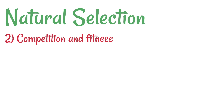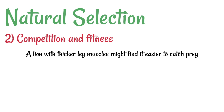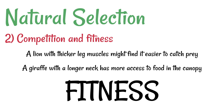Next, let's consider the daily struggle for survival that constantly goes on. There are resources such as food, space, and water which are limited, and there are predators which need to be avoided. A lion that has thicker leg muscles might find it easier to catch prey, so in the struggle for survival it might be slightly better adapted. Similarly, a giraffe with a longer neck may find it slightly easier to access food because it might be able to get food that's higher up in the canopy. This is described as fitness — we can say that some organisms have a greater fitness than others.